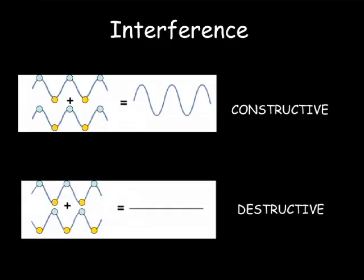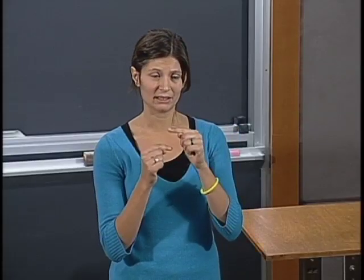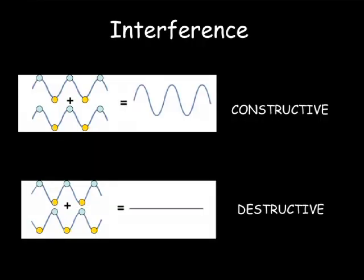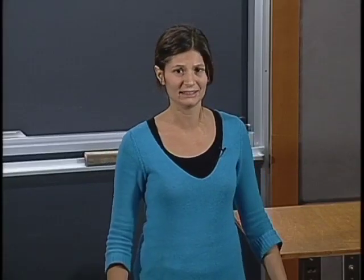For example, we can have constructive interference. When we have constructive interference, the crests of two different waves match, and the troughs match the troughs of the other wave. The resulting wave will be reinforced - we have an amplitude which is higher than the two incoming waves. Destructive interference occurs when two waves meet at the same position but they are out of phase, so the maxima meet with the minima and vice versa. If they have the same amplitude, the resulting wave will be nothing - they cancel out.